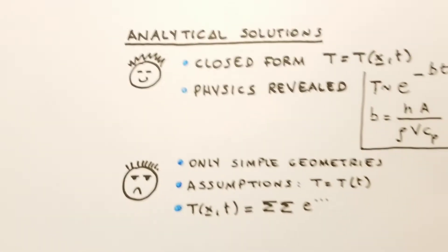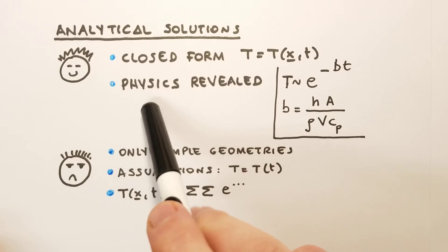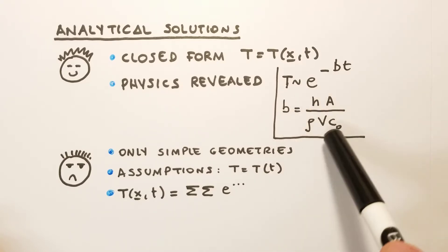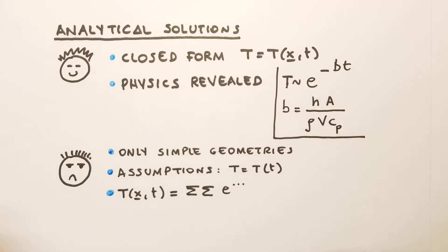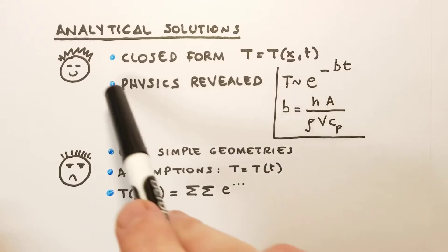But analytical solutions are certainly useful. The advantages of analytical methods are that we find solutions in closed form, so we have the temperature expressed as a function of space and time, which is very useful. Another advantage is that the physics is often revealed. For example, in the lumped system analysis, we found the temperature behaved in exponential form, and the exponent b had a specific form, so we could study the physics by varying those parameters and know how the temperature would respond.